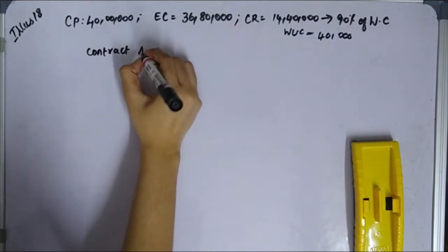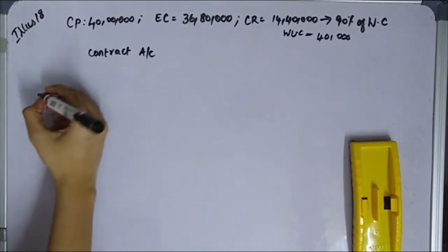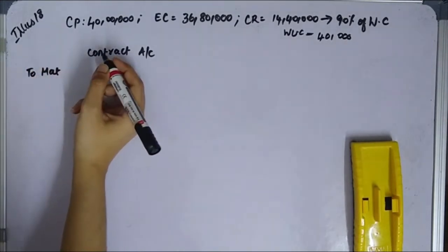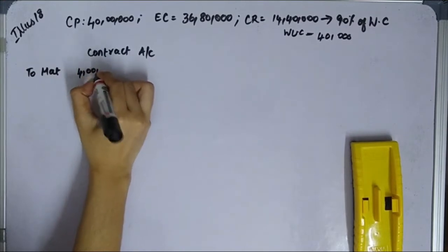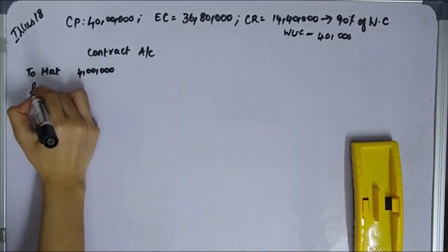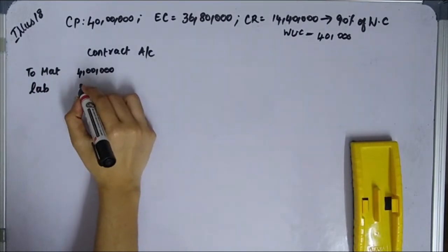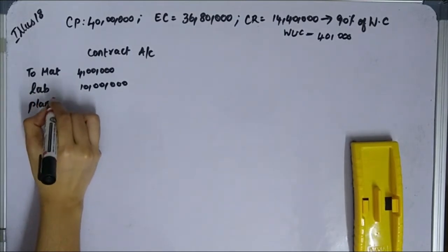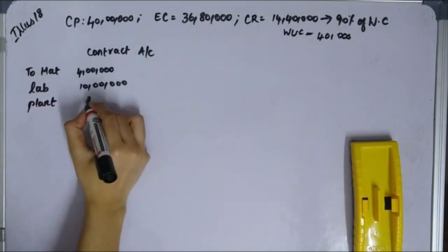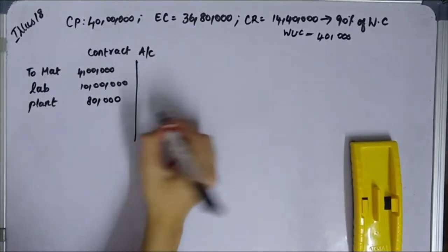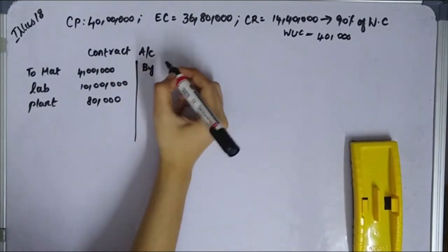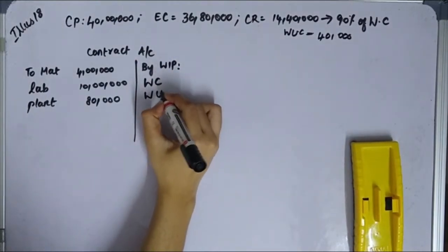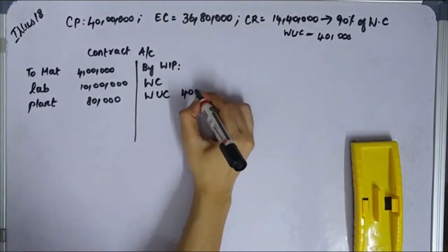In the contract account, on the debit side: materials 4,00,000; labour 10,00,000; plant 80,000. On the credit side, we have work certified and work uncertified. Work uncertified is 40,000.